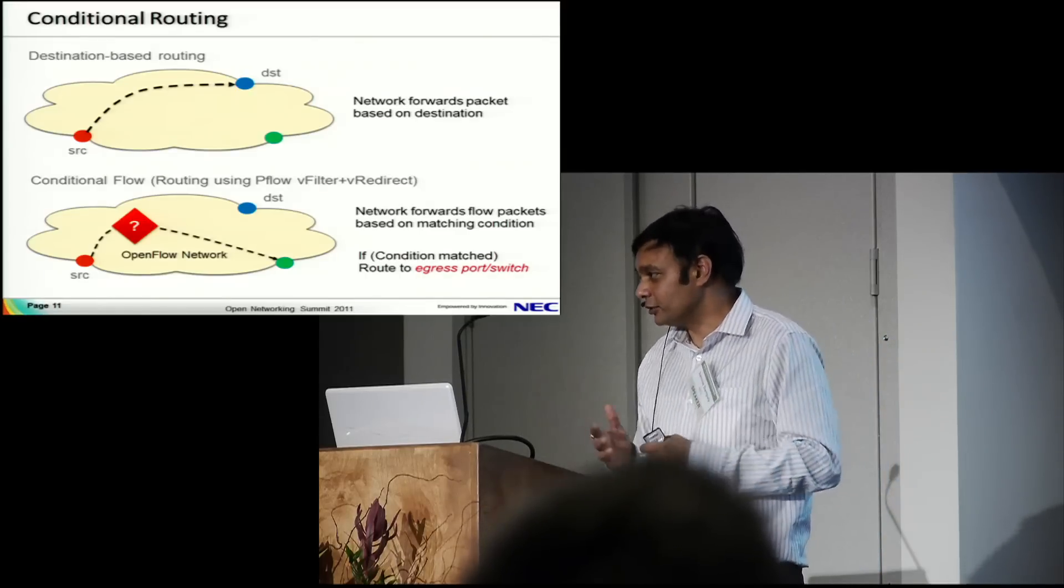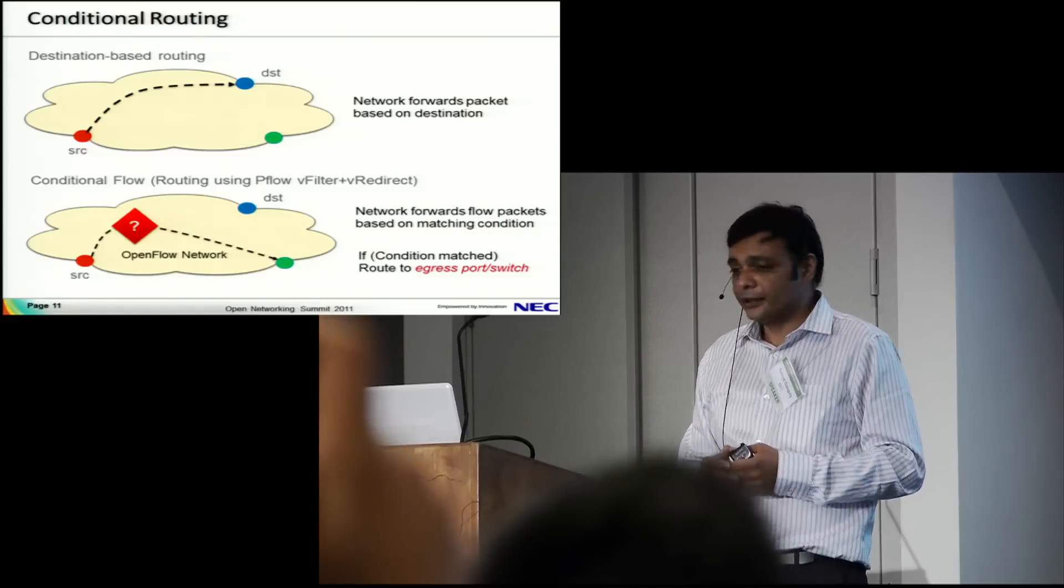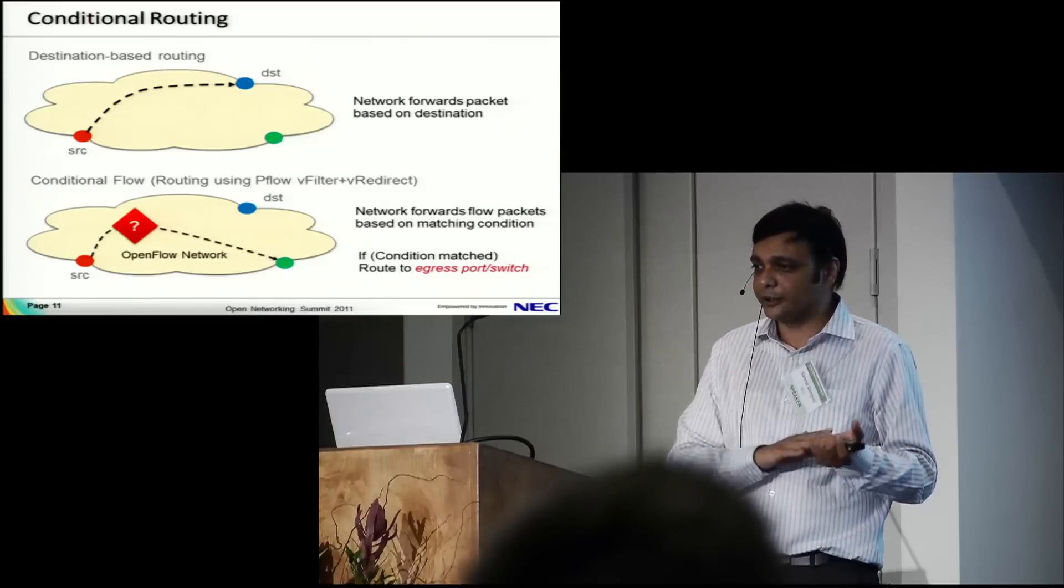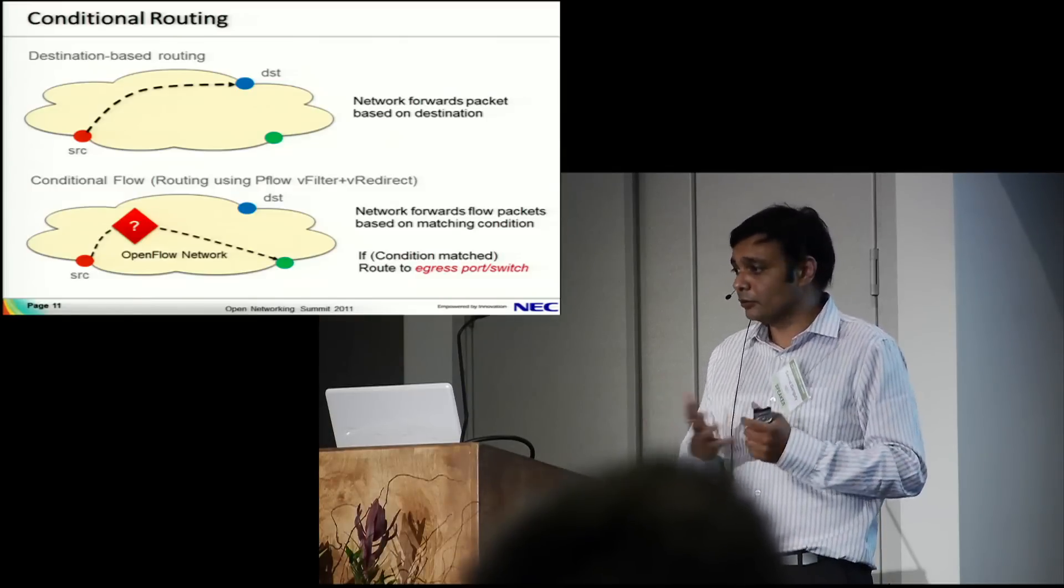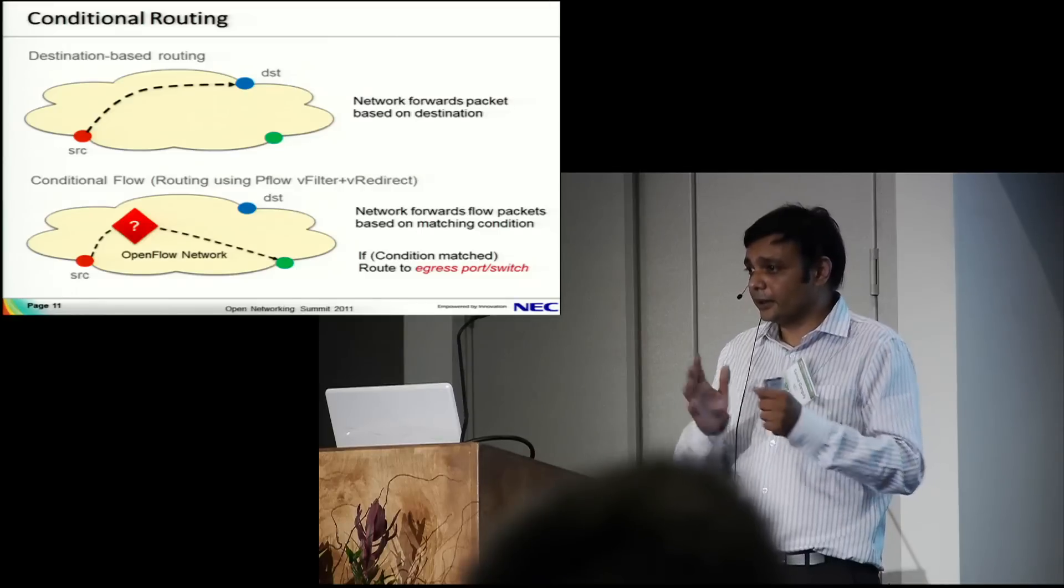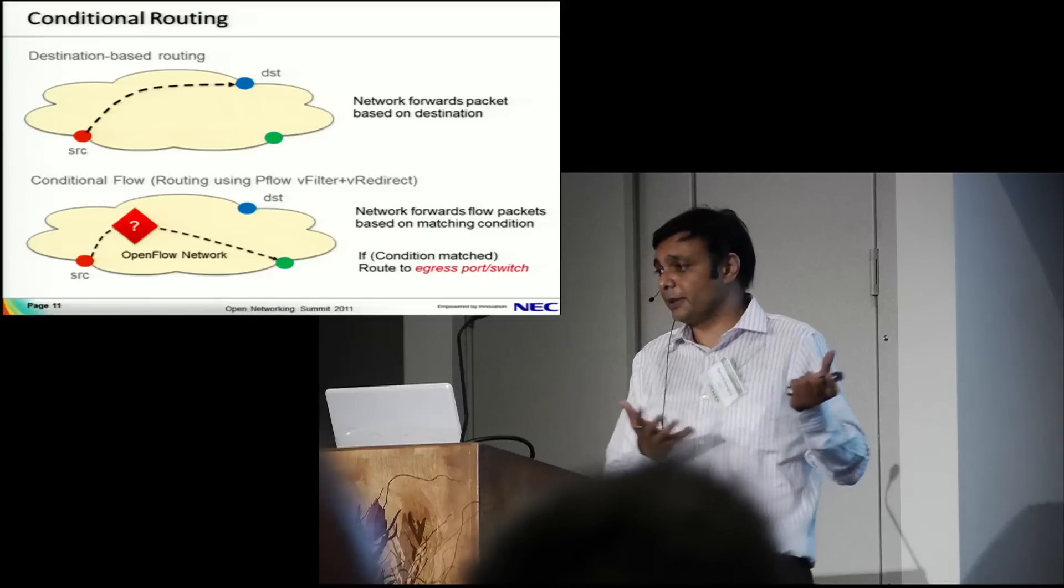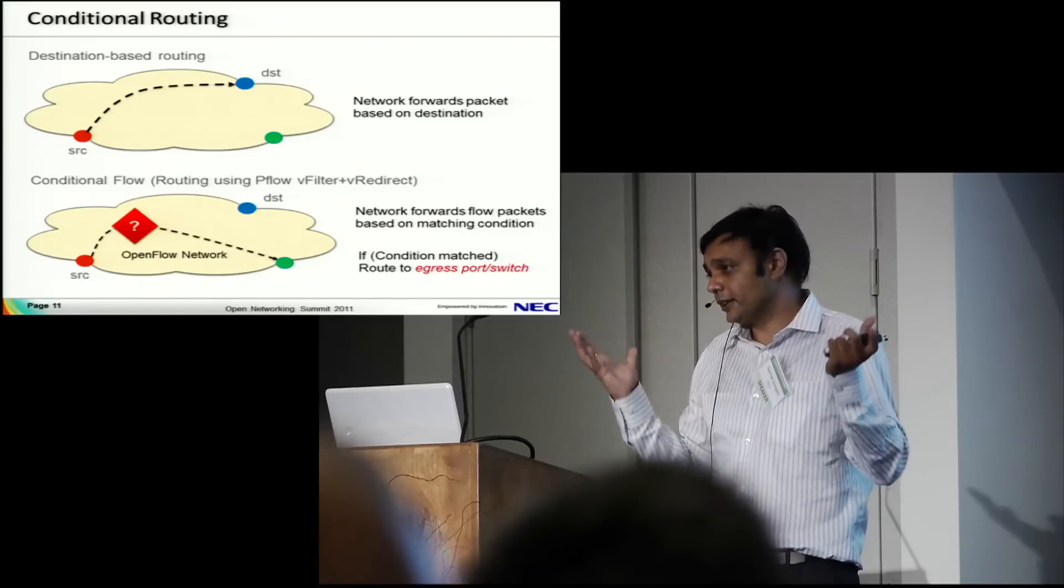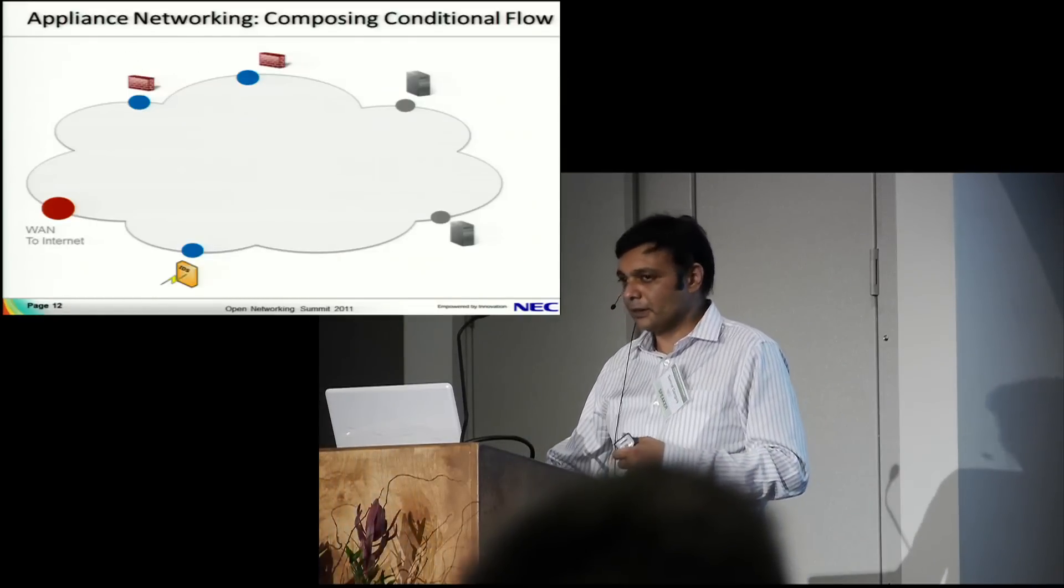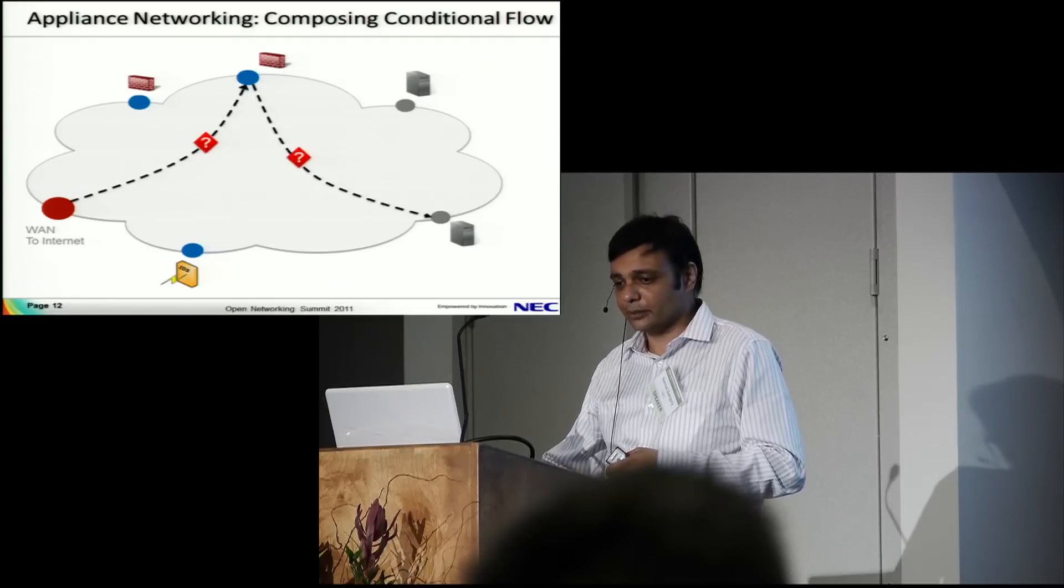It's not about the same layer 2 and layer 3 - can we do something more? We define conditional routing. In normal routing you have a destination and the packet is forwarded based on that destination. What about defining a condition, and that condition connects to a particular destination and should route to it? Are there applications for that? Does it create a rich framework to do things you can't do in legacy networks?